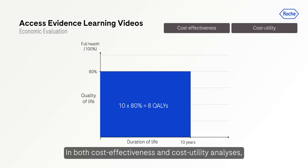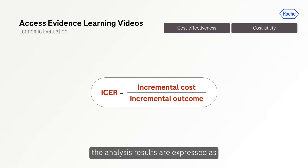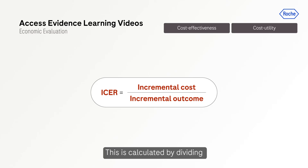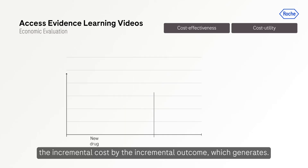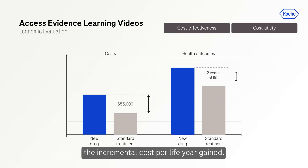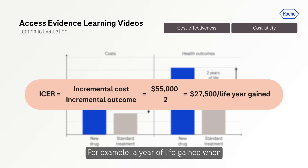In both cost-effectiveness and cost-utility analysis, results are expressed as an incremental cost-effectiveness ratio, or ICER. This is calculated by dividing the incremental cost by the incremental outcome, generating the incremental cost per life year gained. The ICER is therefore a measure of the additional cost of an extra unit of health — for example, a year of life gained when using the intervention instead of the comparator.